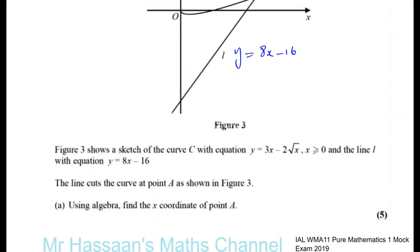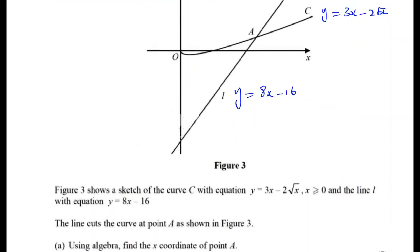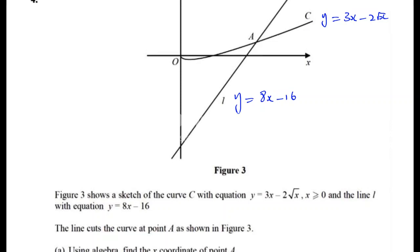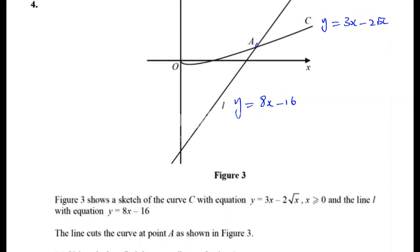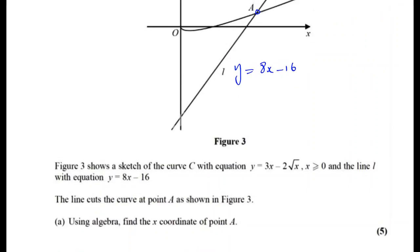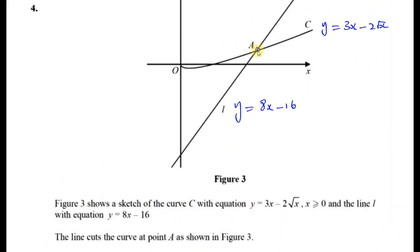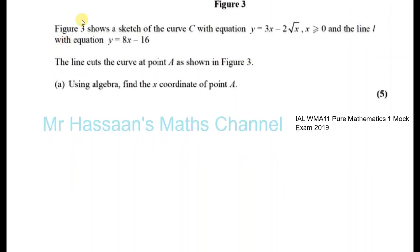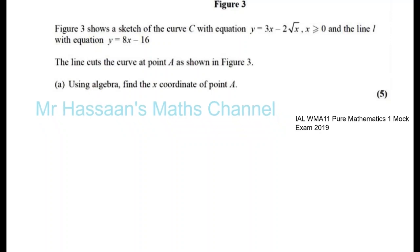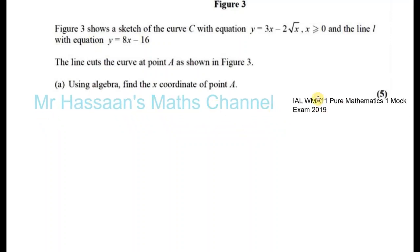The line cuts the curve at the point A as shown — that's where they intersect. Using algebra, we need to find the x-coordinate of point A. So what we need to do is solve these two equations simultaneously.